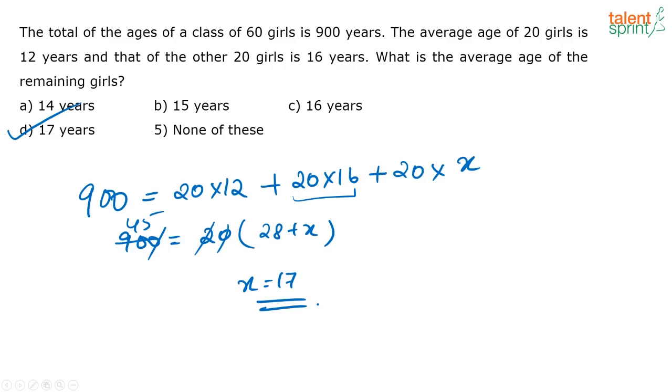Okay, basically I have just equated the total ages of the girls. Total ages of 60 girls is 900. Of the first 20 girls is so much, next 20 girls is so much. Total age is nothing but the number of girls into the average. Equate it like this and get the answer.